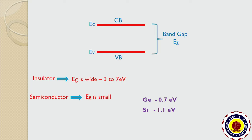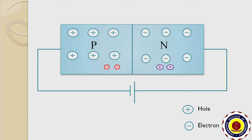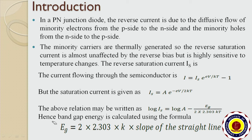We need to measure the band gap of a given semiconductor. In a P-N junction diode, the reverse current is due to the diffusive flow of minority electrons from the p-side to the n-side and minority holes from the n-side to the p-side. The minority carriers are thermally generated, so the reverse saturation current is almost unaffected by reverse bias but is highly sensitive to temperature changes.